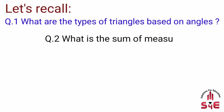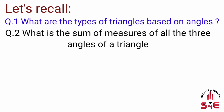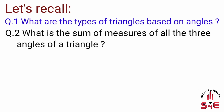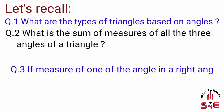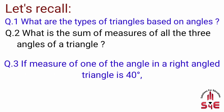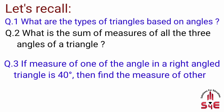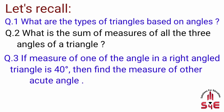Question number two: what is the sum of measures of all the three angles of a triangle? Kisi bhi triangle ke teeno angle ka sum kitna hota hai. Question number three: if the measure of one of the angles in a right-angled triangle is 40 degrees, then find the measure of the other acute angle. Agar kisi right angle triangle mein ek angle ka measurement 40 degree ho to doosre acute angle ka measurement maalum kijiye.